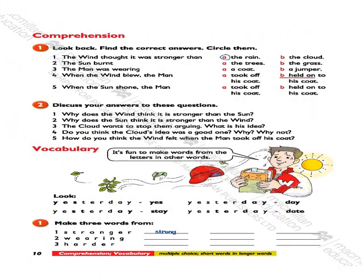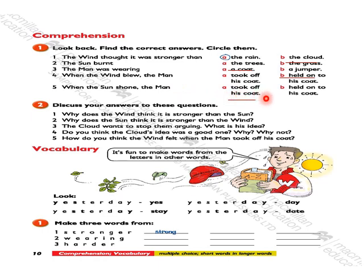Did you listen carefully? Let's focus on the comprehension. Find the correct answers. Like this example: the wind thought it was stronger than the rain. The sun burned the dry grass. The man was wearing a coat. When the wind blew, the man held on to his coat. When the sun shone, the man took off his coat.